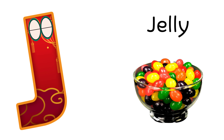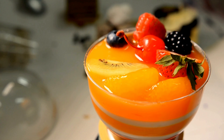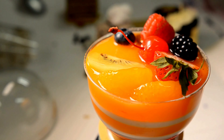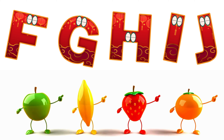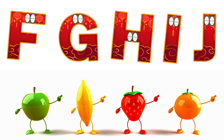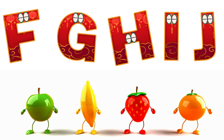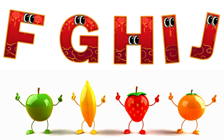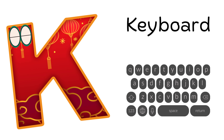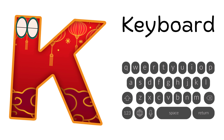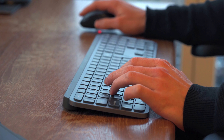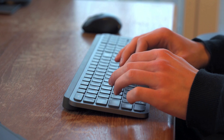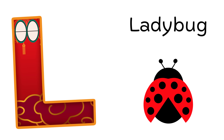J is for Jelly. J, J, Jelly, J, J, Jelly, J, Jelly. K is for Keyboard. K, K, Keyboard, K, K, Keyboard, K, Keyboard.